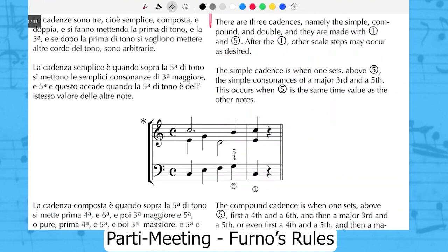The simple cadence is when one sets above scale degree five the simple consonances of a major third and a fifth. This occurs when scale degree five is the same time value as the other notes. So in other words, we don't have usually with the simple cadence any kind of suspensions.